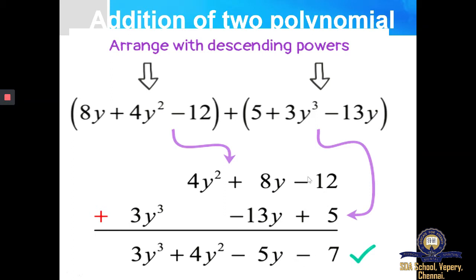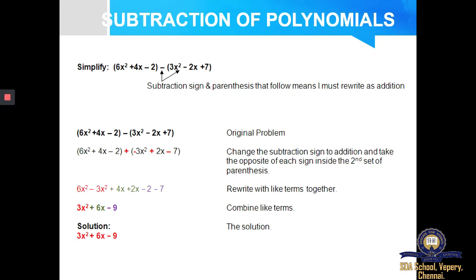Next, moving on to subtraction of polynomials. The question given is: 6X square plus 4X minus 2 minus 3X square minus 2X plus 7. I am going to explain this example with the horizontal method. Earlier we studied addition of polynomials using the vertical method; now we are going to study using the horizontal method. This is the first polynomial and this is the second polynomial.